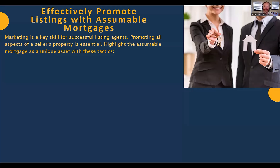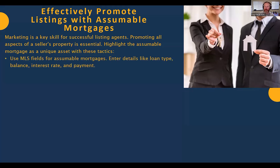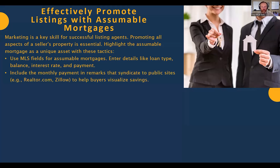Now we'll move into partnering with experts to ensure a smoother transaction process. There are some websites out there whose model is designed to send business to agents around the country and send clients who are looking for these deals. I'm going to talk specifically about AssumeList.com. We have the owner of AssumeList.com, Mike Larino, on here — who is also a Virginia realtor. I've been using his platform myself for marketing and helping existing clients.